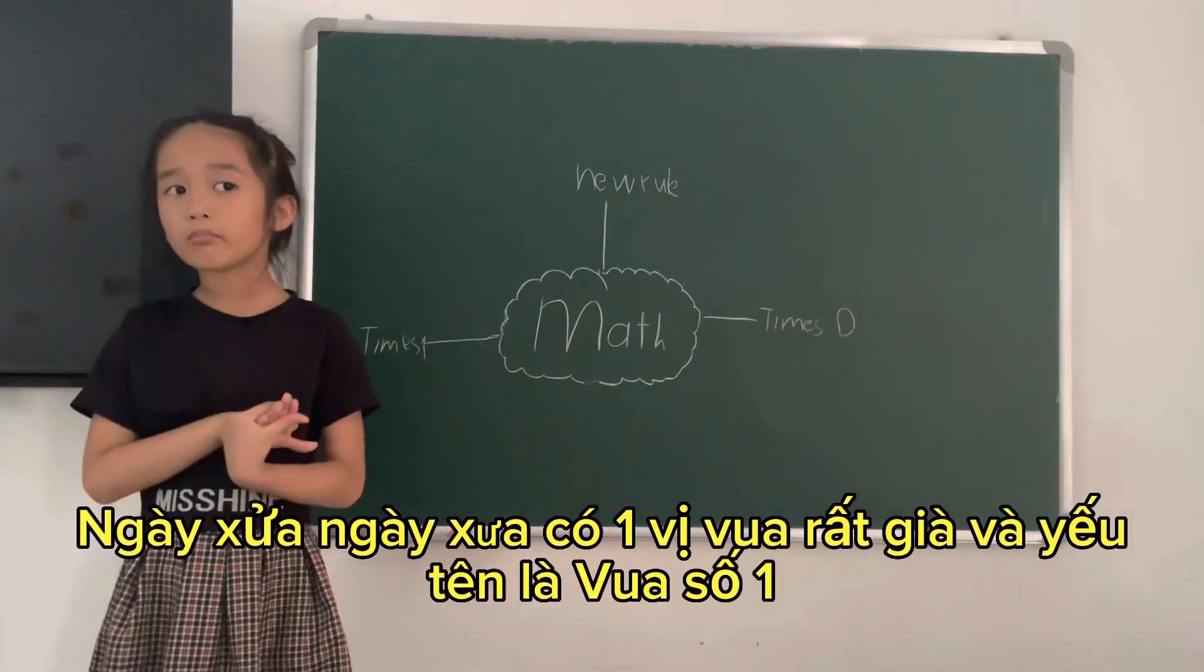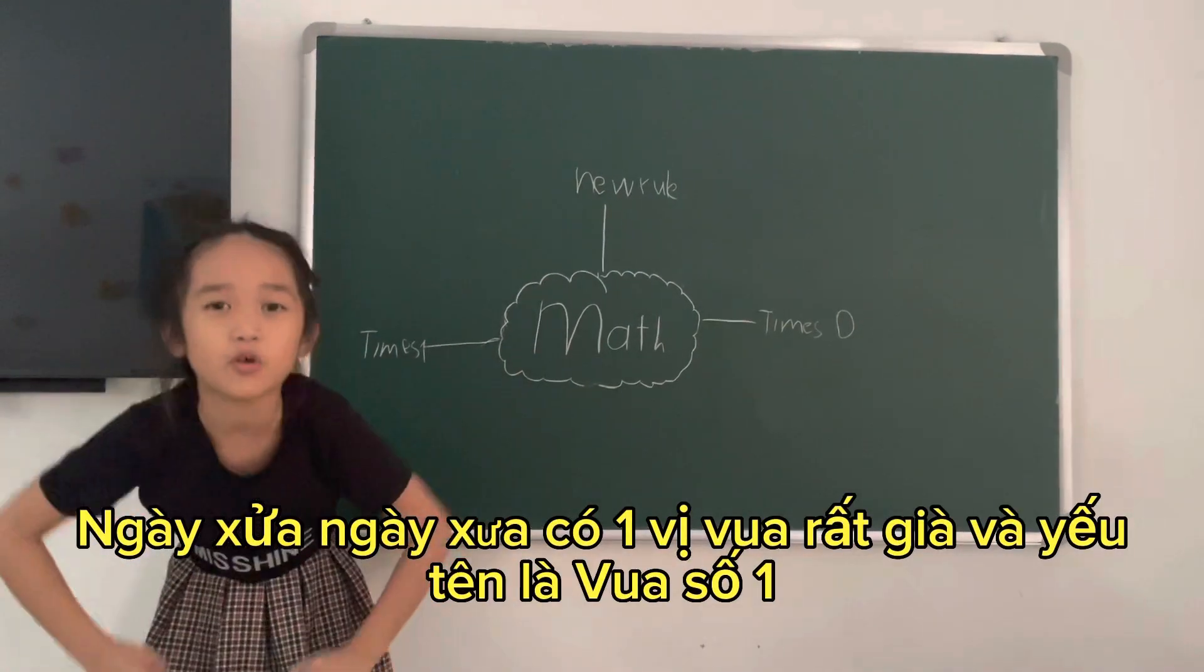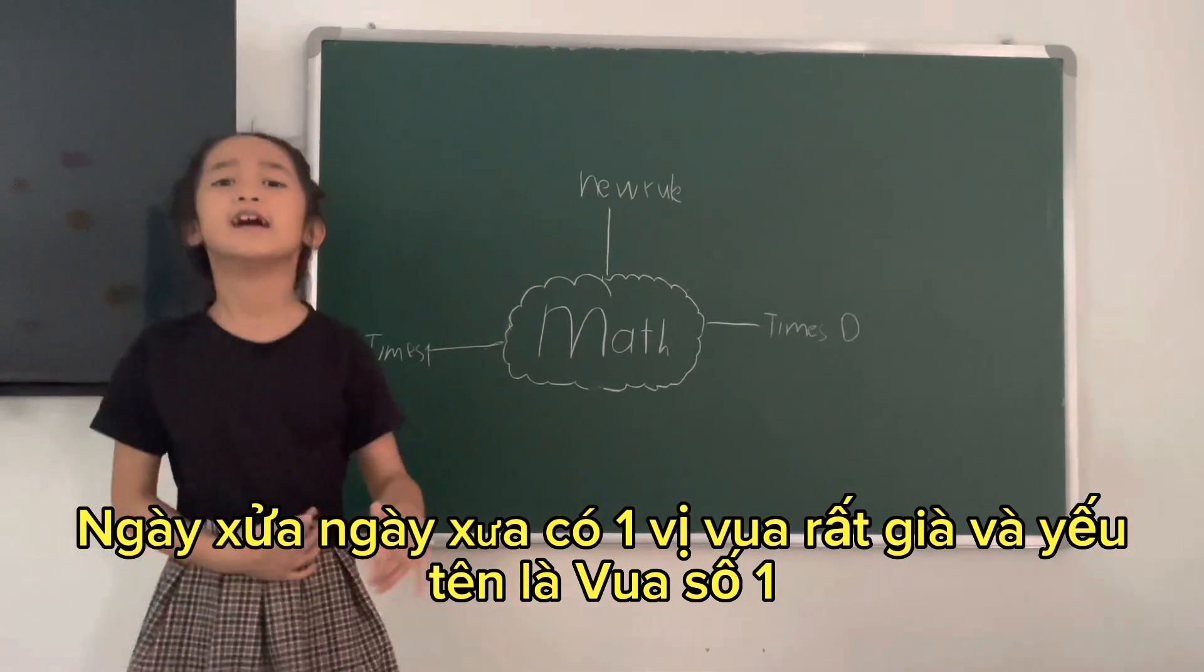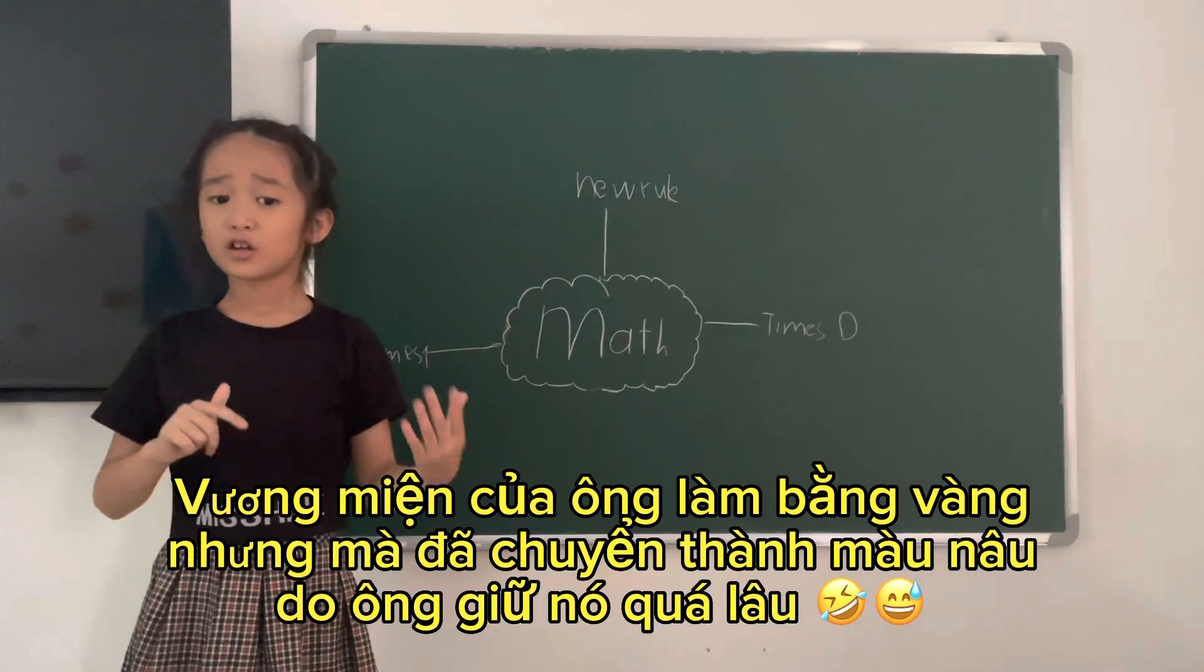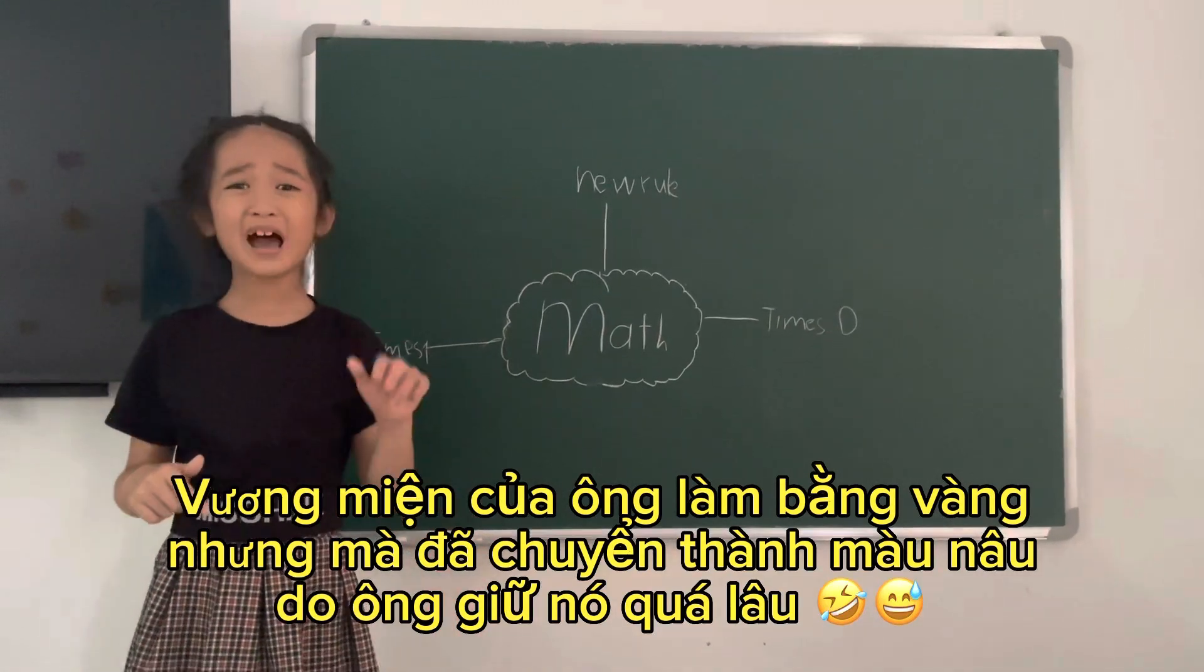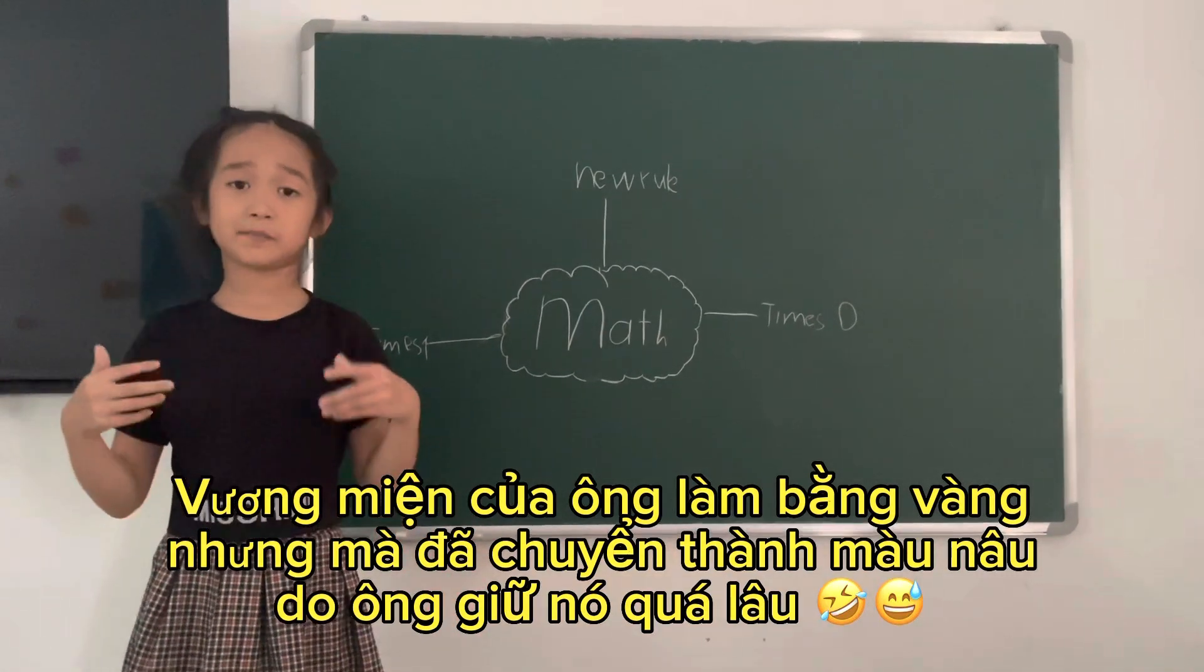Long time ago, there lived a very old and very weak king named King One. He wore his crown. His crown, which is made of gold, turned into some brown color because he kept it many years.